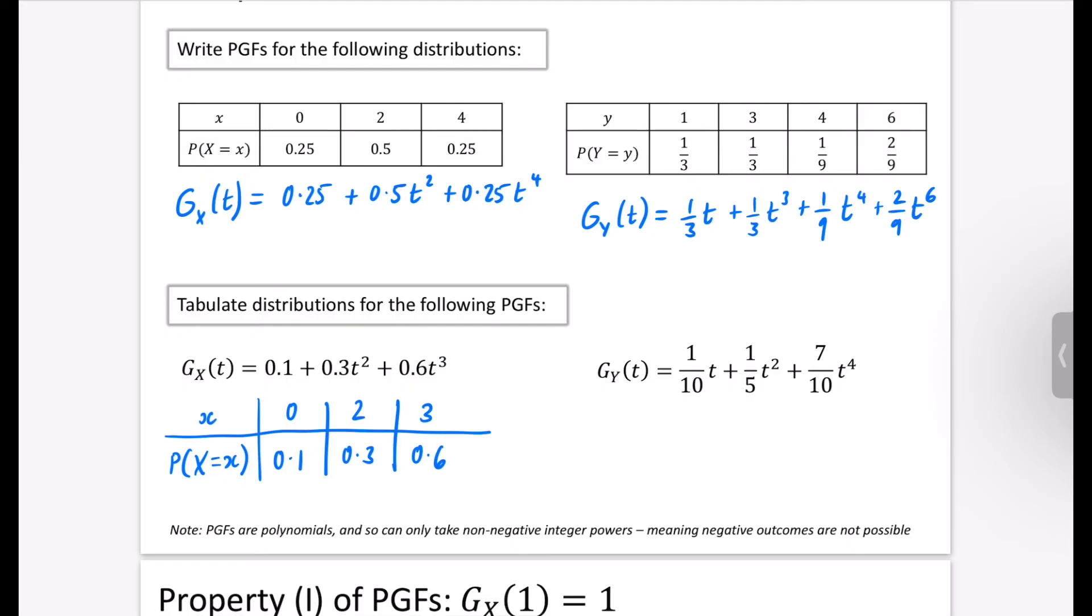And then for this one, because it's for y, we're going to have lowercase y, and the probability that y is equal to y. And we're going to see what our outcomes are here. So the tenth probability, that is going to go with t to the power of 1. The fifth probability is going to go with t squared, so it's outcome of 2. And the seven-tenths probability is going with t to the power of 4, so the outcomes are 1, 2, and 4 here.